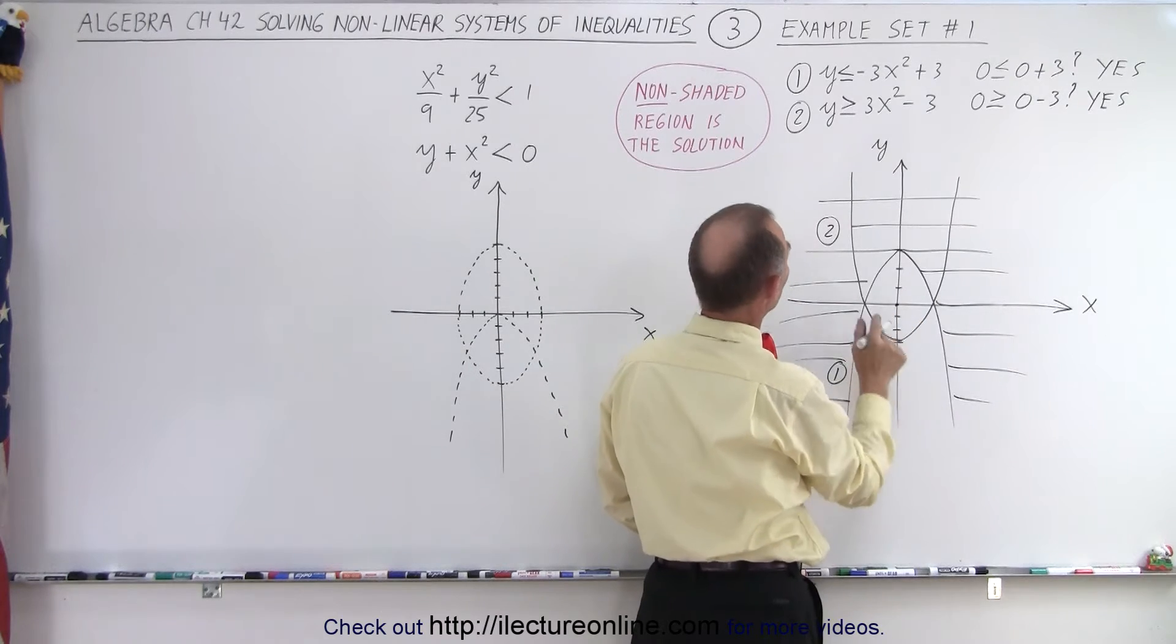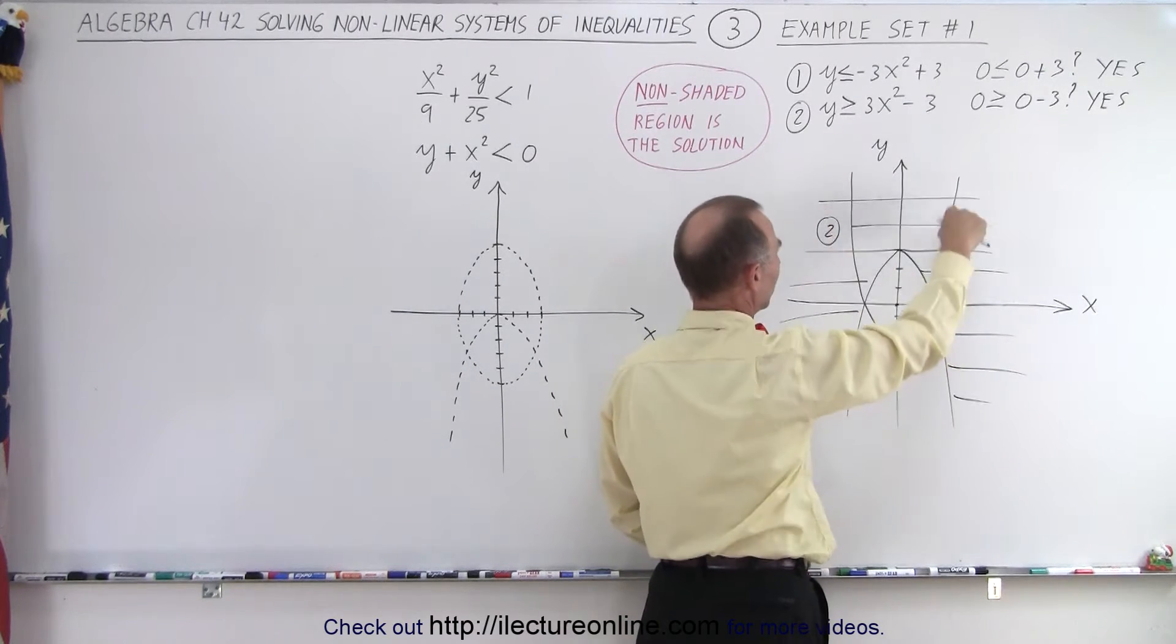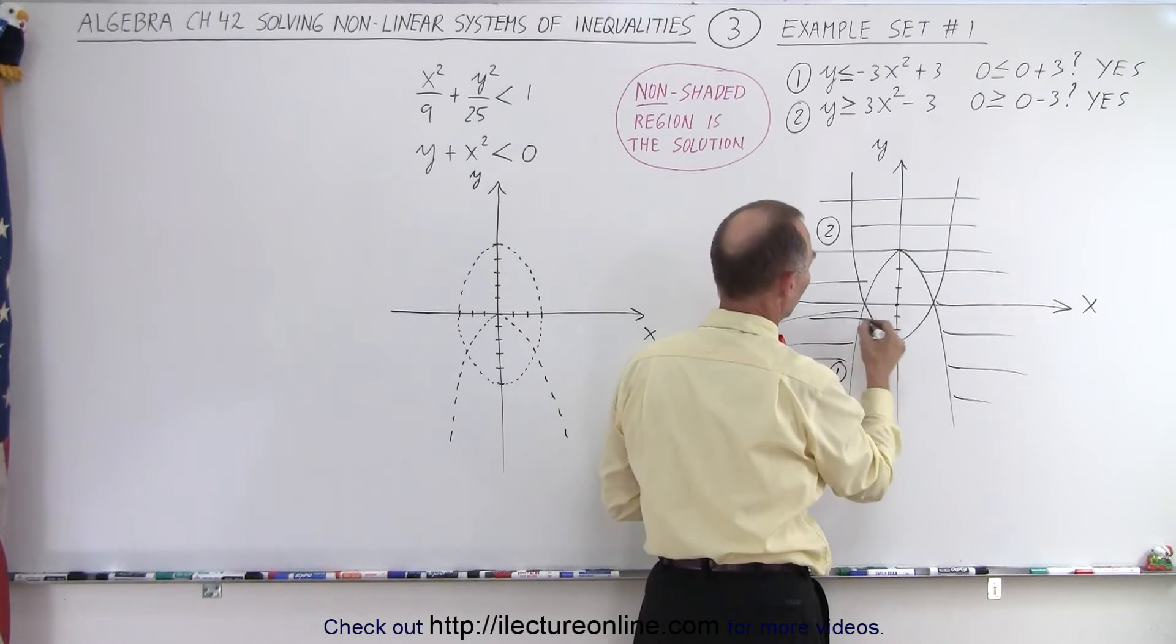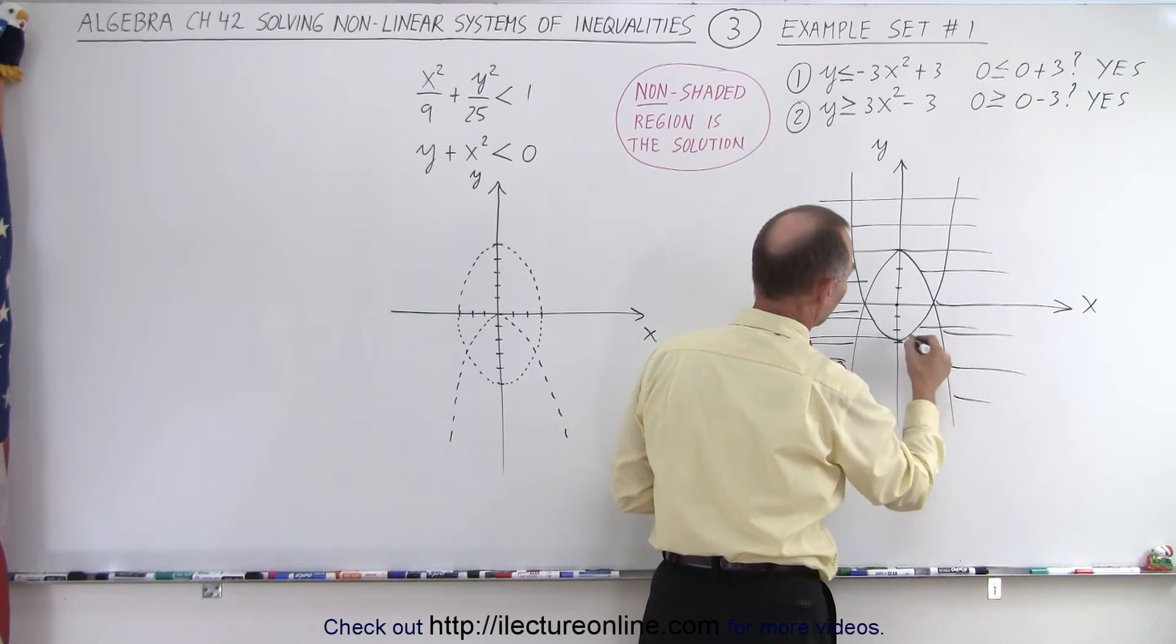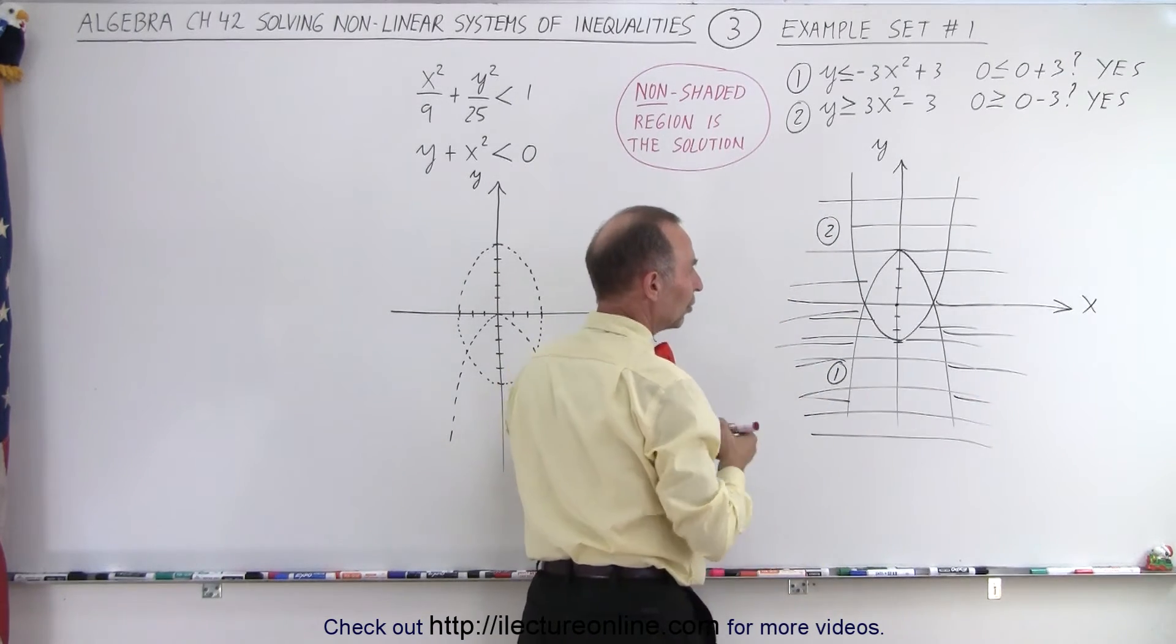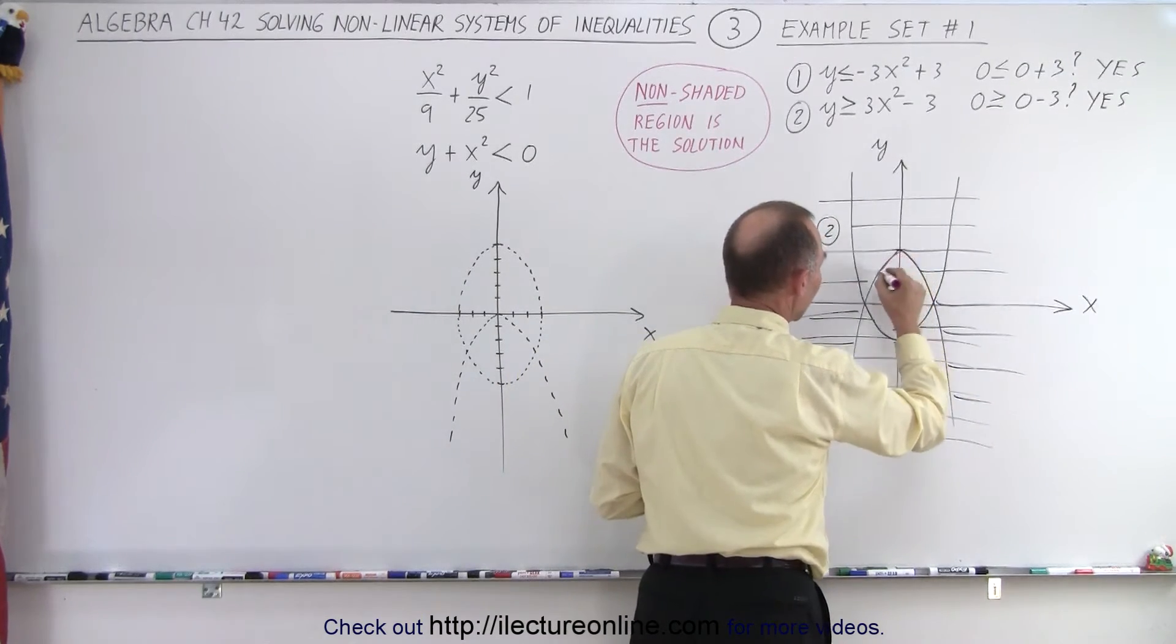So that means for the second parabola, that point—the origin—is also part of the solution, which means for problem number two, this one right here, anything outside the parabola is not part of the solution. So we can go ahead and scratch that one out as well. That means that the only portion left that's the solution is what's inside here.